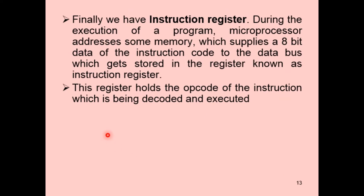Finally, we have the instruction register. During execution of a program, the microprocessor addresses memory which supplies the 8-bit instruction code to the data bus, and this gets stored in the instruction register. The function of the instruction register is to hold the opcode (operation code) of the instruction, which is then decoded and executed.